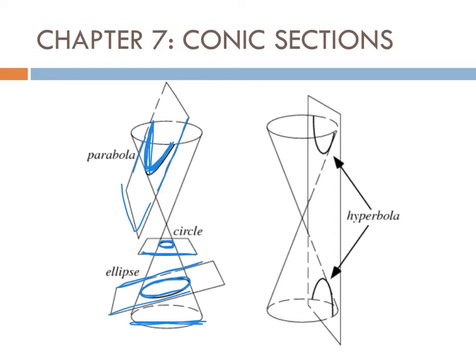The last case is if you slice through both right cones — both the top and the bottom. When you slice this way, you create two parabolic branches called hyperbolas. Throughout chapter 7 we'll progress through all four shapes, learning specific notation, the correct equation form, and how to graph all four shapes by hand.